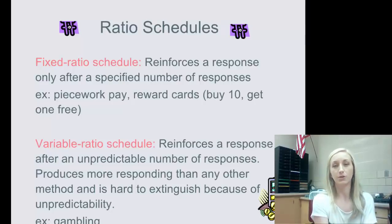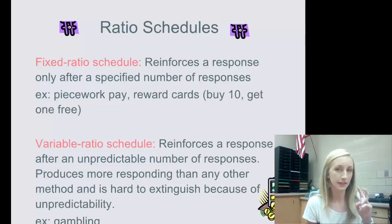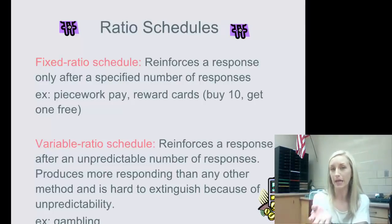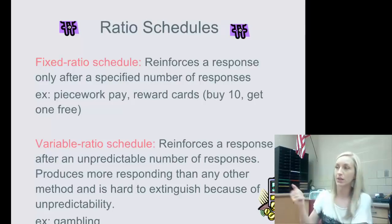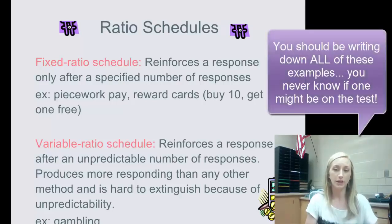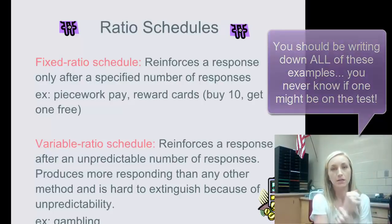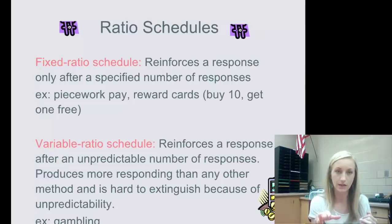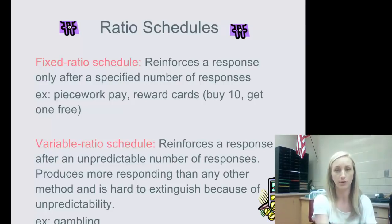A fixed ratio schedule reinforces a response only after a specified, fixed number of responses. For instance, piecework — for every 50 square feet of carpet you lay, you get paid. Or in a factory, for every third car door you put on properly, you are reinforced. You know when it's coming because it's fixed — every three times — and it's ratio because it's the number of times you respond.